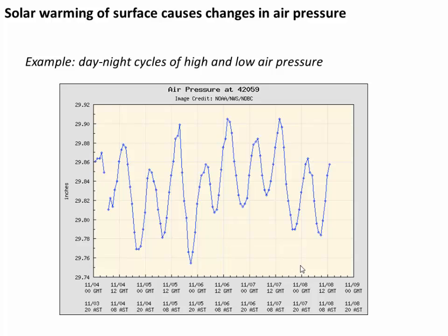An example of changes in air pressure is shown in this figure, with time along the x-axis and air pressure along the y-axis. You can see that at night when it's cold, the air pressure is high. Then during the day when it warms, the air pressure gets much lower. These are daily cycles of air pressure changing as the surface of the earth warms and the air next to it also gets warmer.